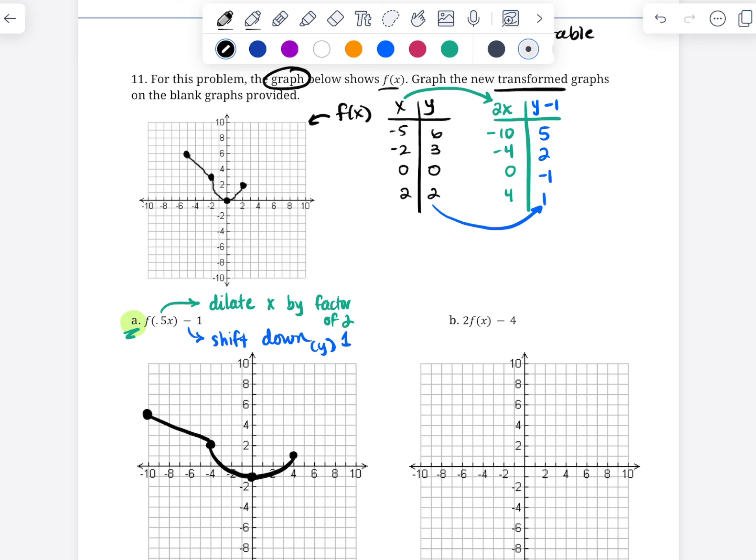And so now I have this shape that looks like this. And ask yourself, does it look like we dilated? Did we stretch it out a bit by 2? It looks bigger, like wider, and it looks lower, so mission accomplished.